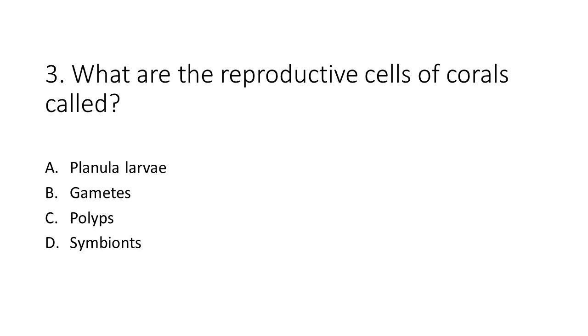Number 3. What are the reproductive cells of corals called? A. Planula larvae. B. Gametes. C. Polyps. D. Symbionts.